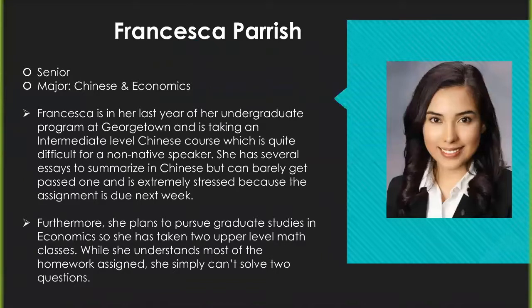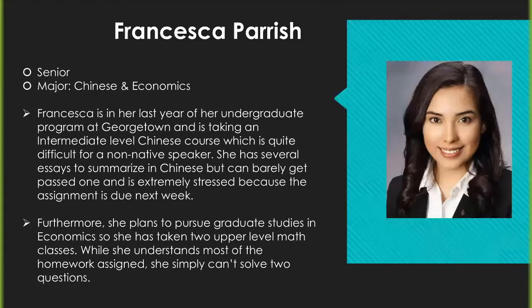Our next student, Francesca, is a senior — last semester on campus — and she's majoring in Chinese and economics. It's her last year of her undergrad program at Georgetown, and she's taking an intermediate-level Chinese course, which is quite difficult for a non-native speaker. She has several essays to summarize in Chinese but can barely get past one, and is extremely stressed because the assignment is due next week. Furthermore, she plans to pursue graduate studies in economics, so she has two upper-level math classes. While she understands most of the homework, she simply can't solve two questions. So what should Francesca do?